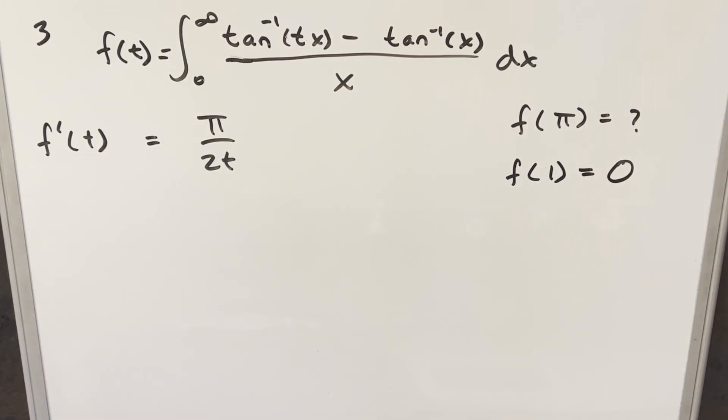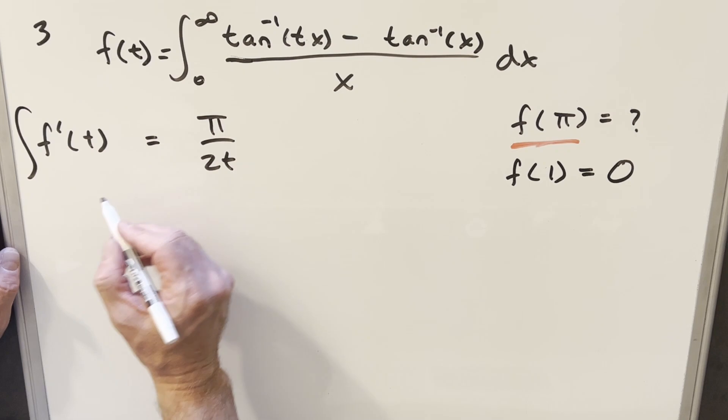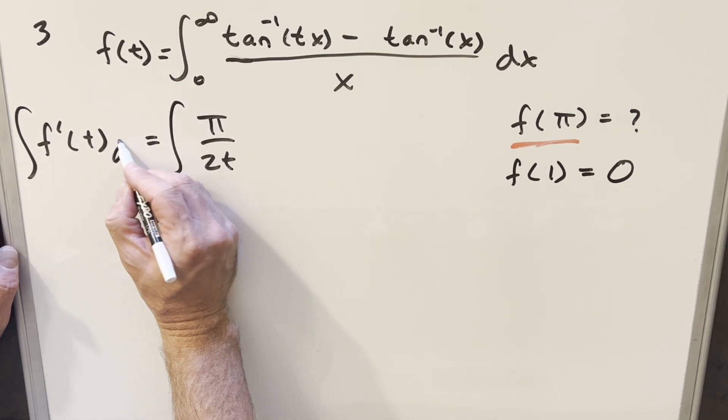So now we have our value for f prime of t. But we need to keep in mind our goal, we need to get back to f of t. Because what we really need is this f of π. That's what we're trying to find. So what I can do to transform this, let's just take an integral on both sides with respect to t.